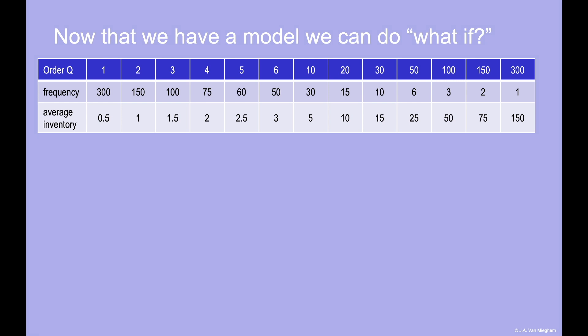An order quantity of one means that you reorder after each sale, almost a perfect just-in-time pull system. The benefit is that you have at most one unit in inventory, but the downside is that you must place, transport, and receive 300 orders per year. On the other extreme, if you place an order of 300, you order only once per year. That may be beneficial, but it does lead to a huge inventory starting at 300 and taking a year to consume.